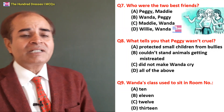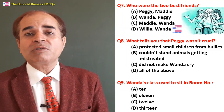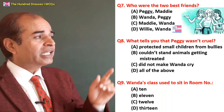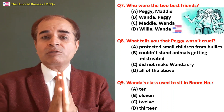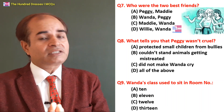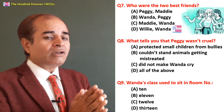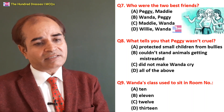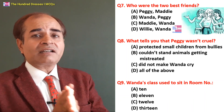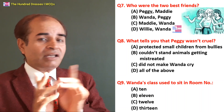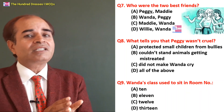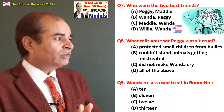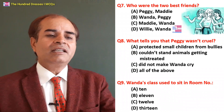Eighth question: What tells you that Peggy was not cruel? Number 1: She protected small children from bullies — yes. Number 2: She could not stand animals getting mistreated — yes. Number 3: She did not make Wanda cry — yes, she teased but never made her cry. All of the above — D is the right answer. All three points show she was not cruel.